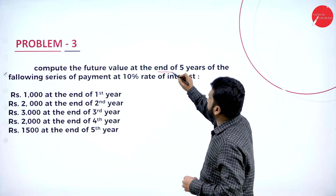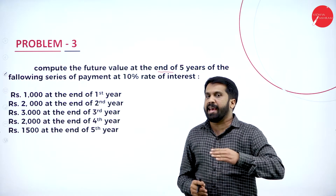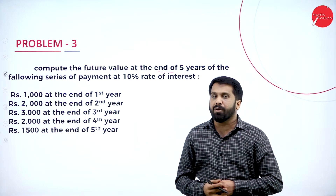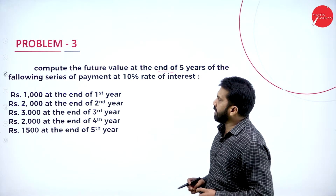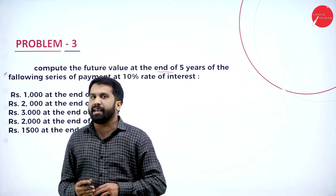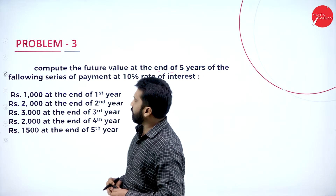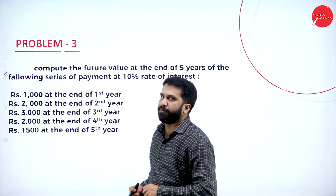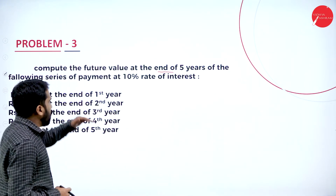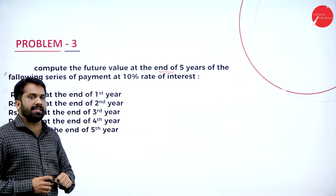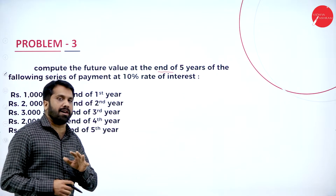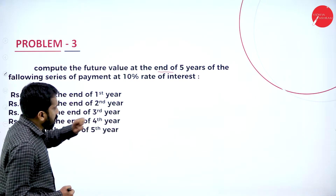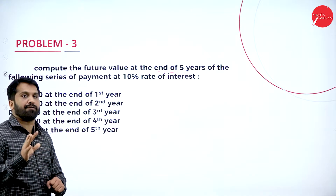He is investing at the end of each year — every year end he is investing 1,000, 2,000, 3,000, 2,000 and 1,500. These are the given values. Now we will go for the same formula — no changes in the formula. But since we have 5 years, we have to write your formula 5 times.